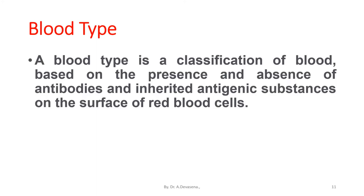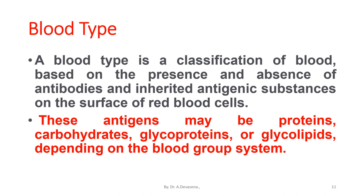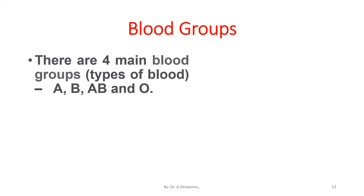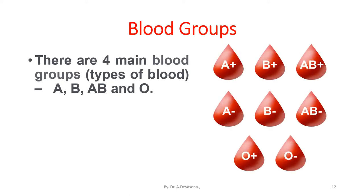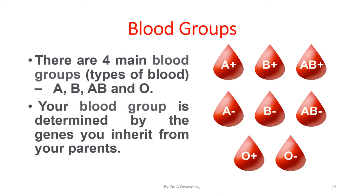A blood type is a classification of blood based on the presence and absence of antibodies and inherited antigenic substances on the surface of red blood cells. These antigens may be proteins, carbohydrates, glycoproteins, or glycolipids depending on the blood group system. There are four main blood groups: blood group A, blood group B, blood group AB, and blood group O. Your blood group is determined by the genes you inherit from your parents.